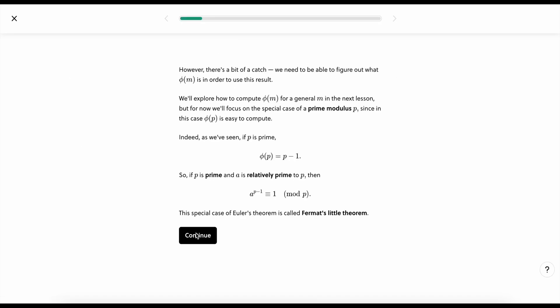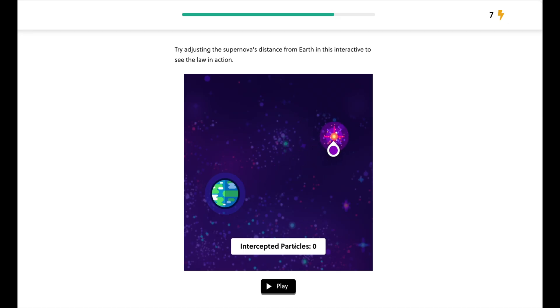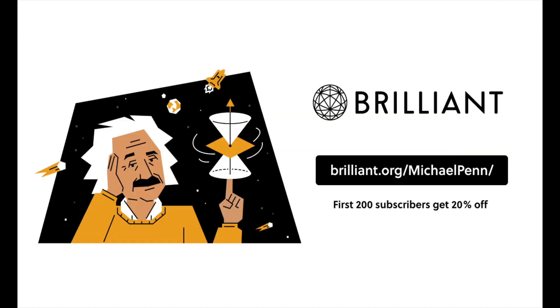But we're scientists here, so don't take my word for it. You should test it for yourself. Treat yourself to a unique, hands-on experience by going to brilliant.org slash Michael Penn for a 30-day free trial, and the first 200 people will get 20% off their annual subscription. Thanks once again to Brilliant for sponsoring today's video.